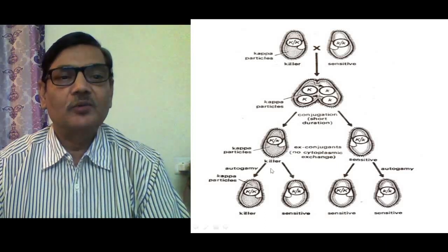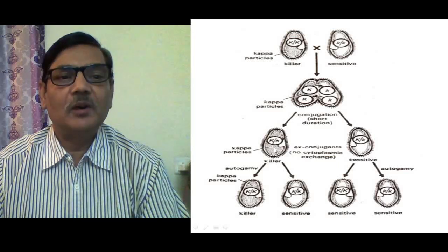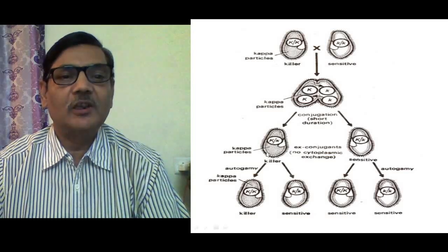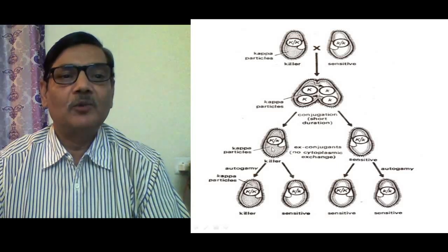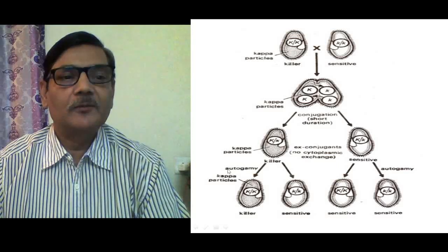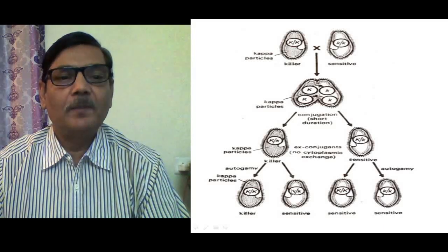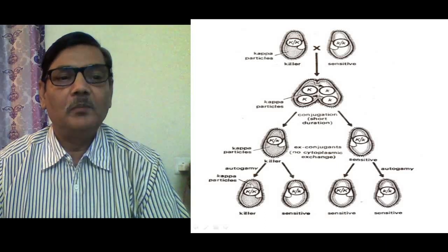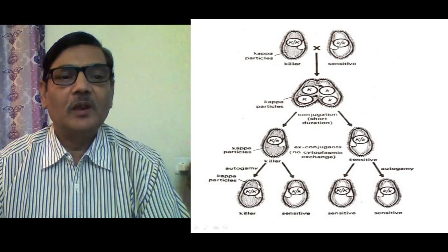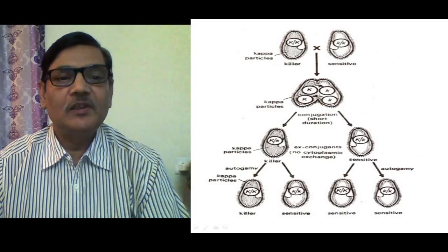Autogamy is a kind of sexual reproduction in which a single Paramecium undergoes reproduction. Its micronucleus divides meiotically and then two micronuclei fuse, maintaining the diploid condition. Through autogamy, the two paramecia formed will be of genotype capital K capital K and small k small k. The one that is capital K capital K will be killer because it has the dominant allele to maintain the particles, whereas the one that is small k small k will change into sensitive form.